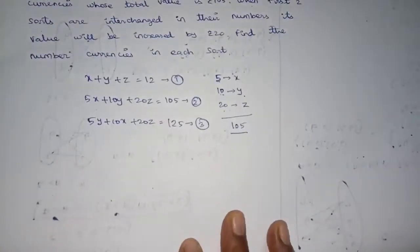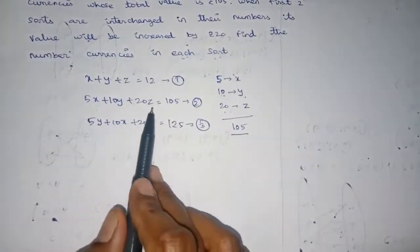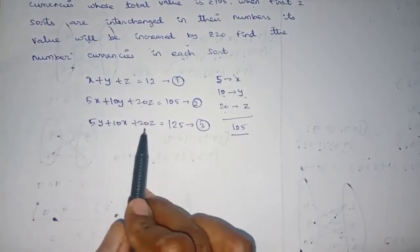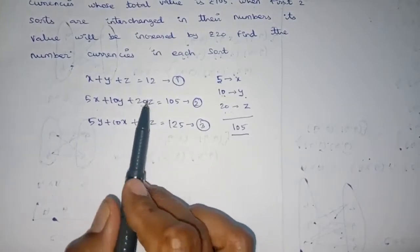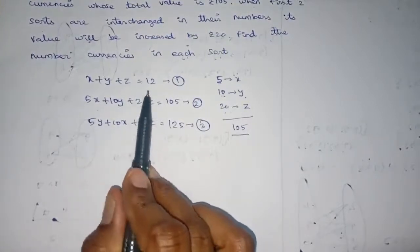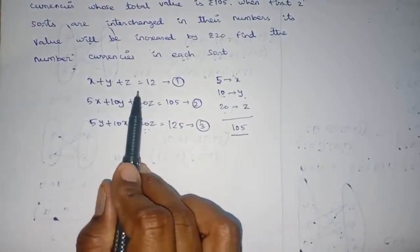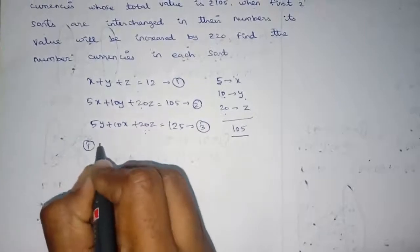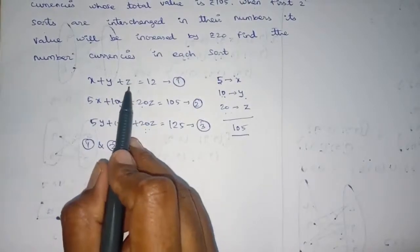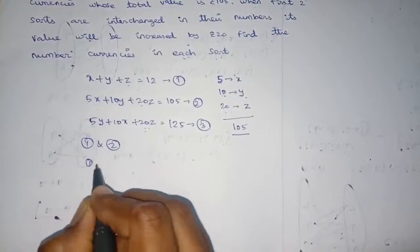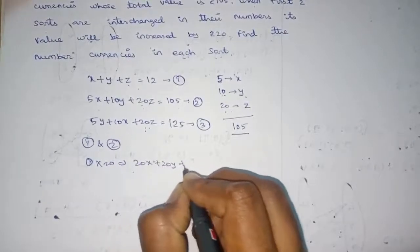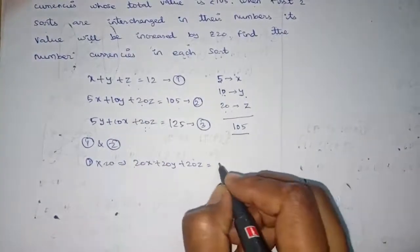This is the third equation. To solve equations 1 and 2, we cancel 20Z. We multiply equation 1 by 20: 20X plus 20Y plus 20Z equals 12 into 20, which is 240.